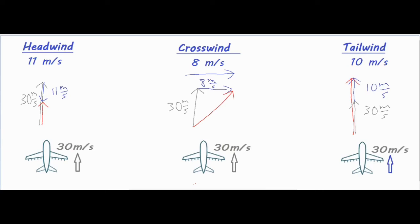For the first and third problems they're pretty easy. The first just goes up 30 and then back 11, so that gives a final resultant velocity of just 19 meters per second. The third goes up all in the same direction.